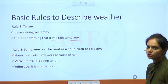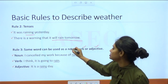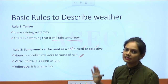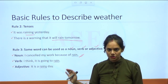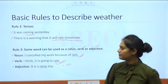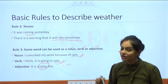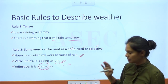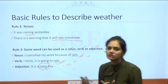Rule number three: the same weather word can be used as a noun, verb, or adjective. As a noun: 'I cancelled my work because of rain' — rain is a thing. As a verb: 'I think it is going to rain' — it expresses an action about to happen. As an adjective: 'It is a rainy day' — rainy describes the noun. So the same word can be used in three different ways depending on the situation.